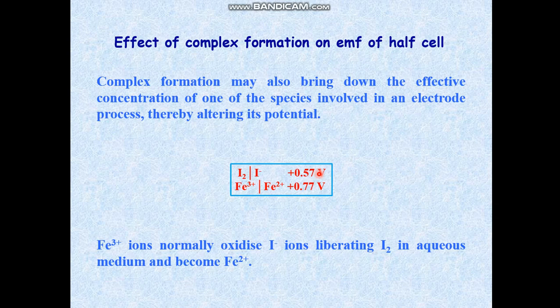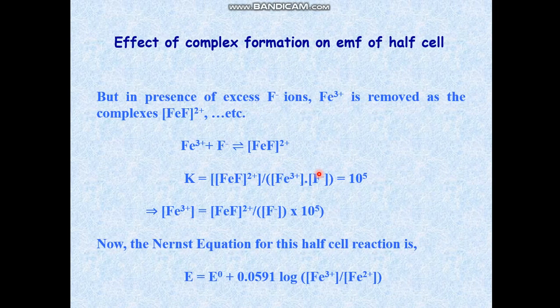So you cannot distinguish the estimate of iron and copper. What we have to do is mask iron with the help of potassium bifluoride. Why? Because in presence of fluoride ion, iron forms complexes which help Fe³⁺ ion to decrease its concentration. With this, the formal potential of the ferric-ferrous system decreases and it becomes less than the iodine-iodide system.